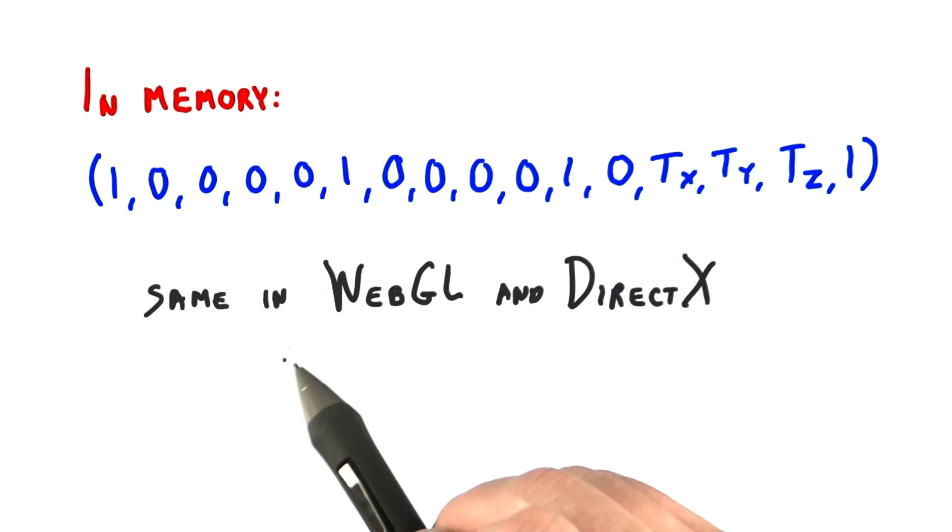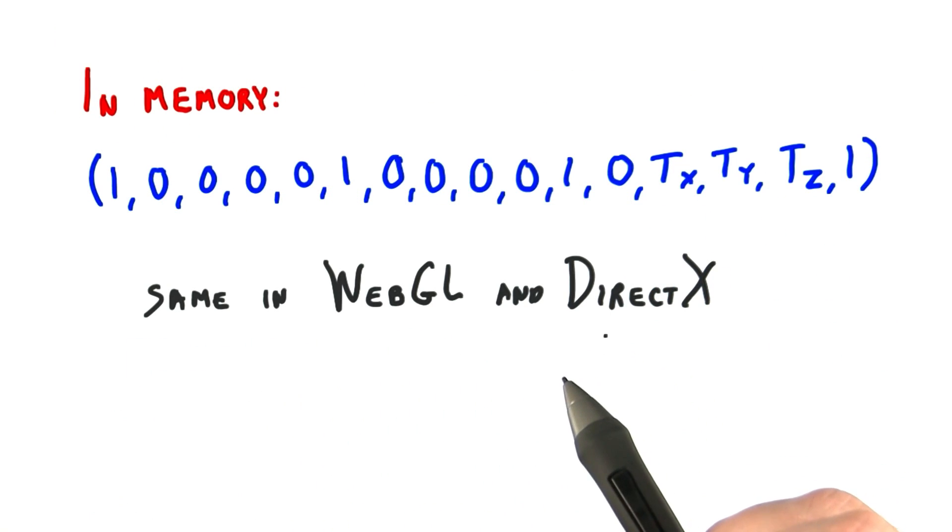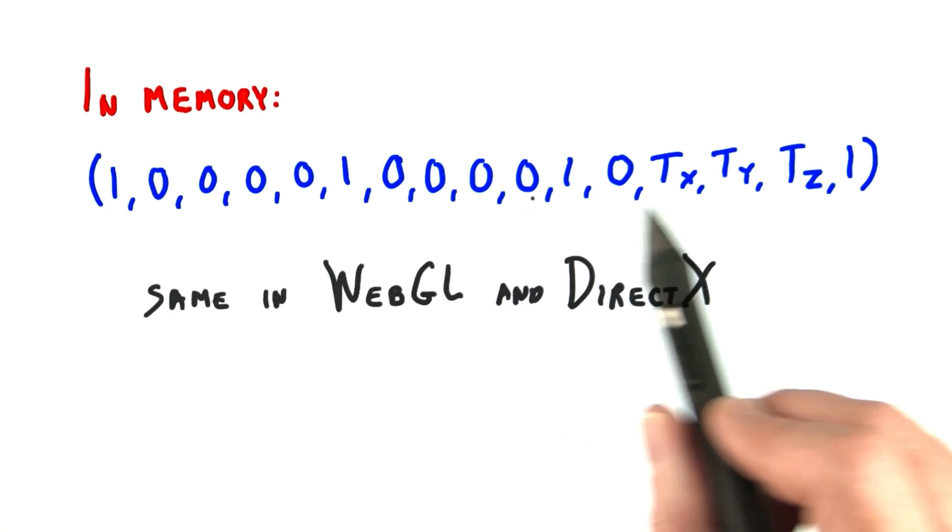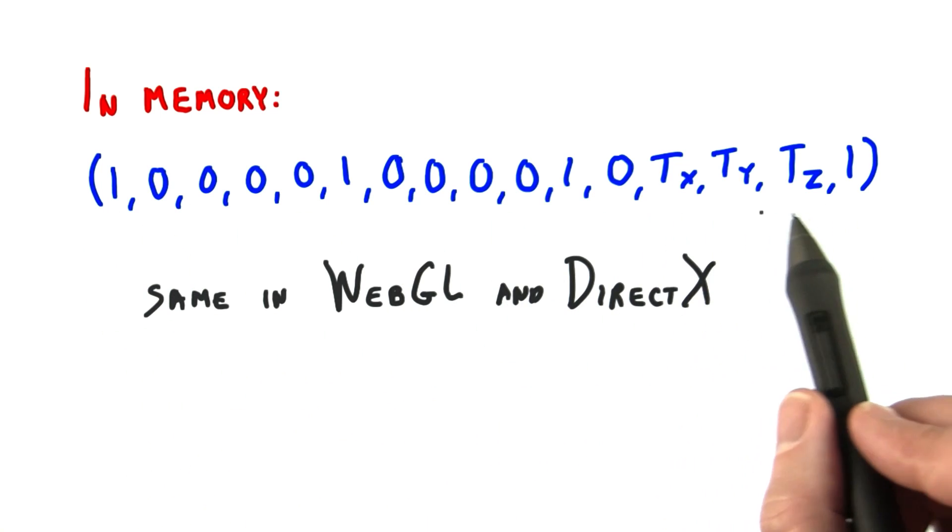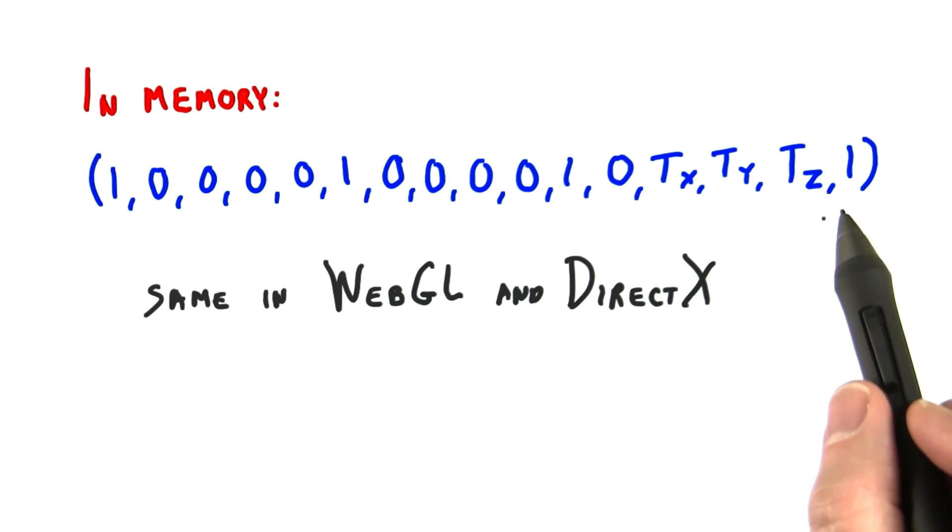The good news is that internally, WebGL and DirectX ultimately store the translation values in the same locations in memory. If you go look at any matrix in memory, you'll see that the last four values are the three translation values and then a one.